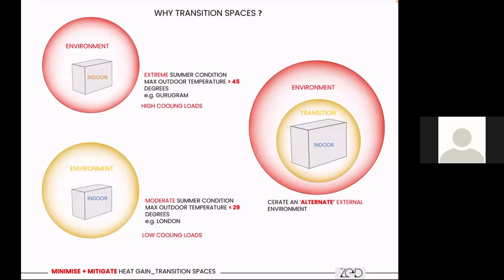If we move the same building to a climatic zone like London, where outside air temperature never exceeds 29 degrees, the cooling load of the building drops drastically — because of the change in external climatic conditions. So it is not just the building which needs cooling; it is how you treat the environment around the building that can decrease the heating or cooling load. This is where the transition space — an in-between space between the inside and the outside, which we call the 'third space' — was practiced very effectively in our traditional buildings, because there was no alternate active cooling mode available.